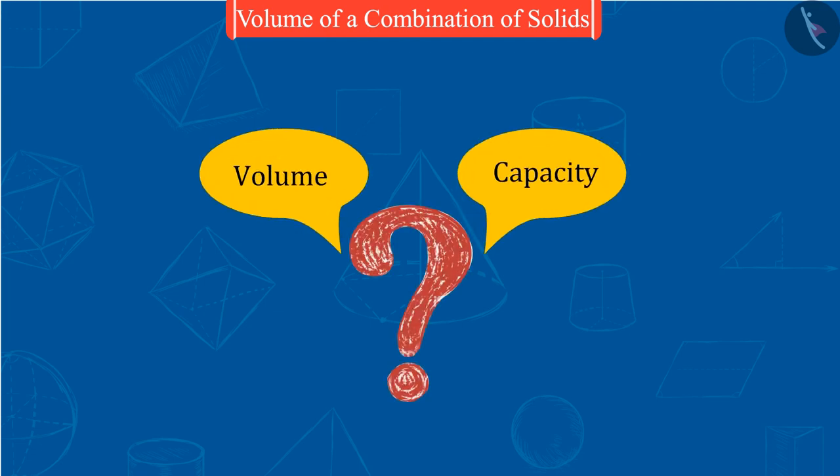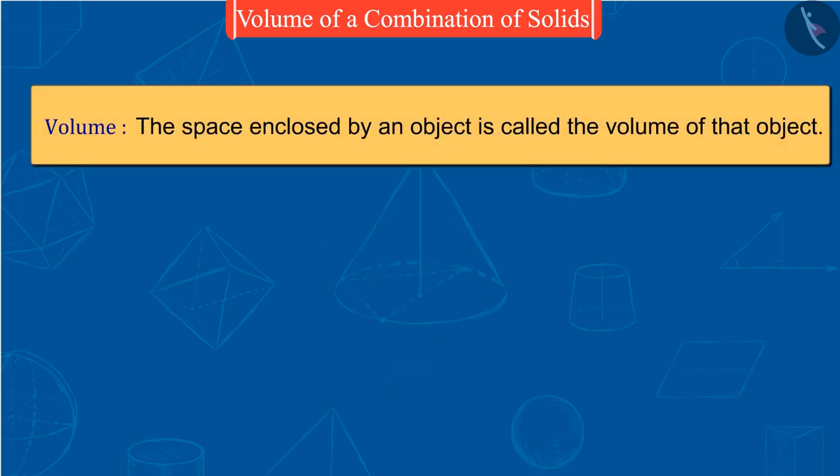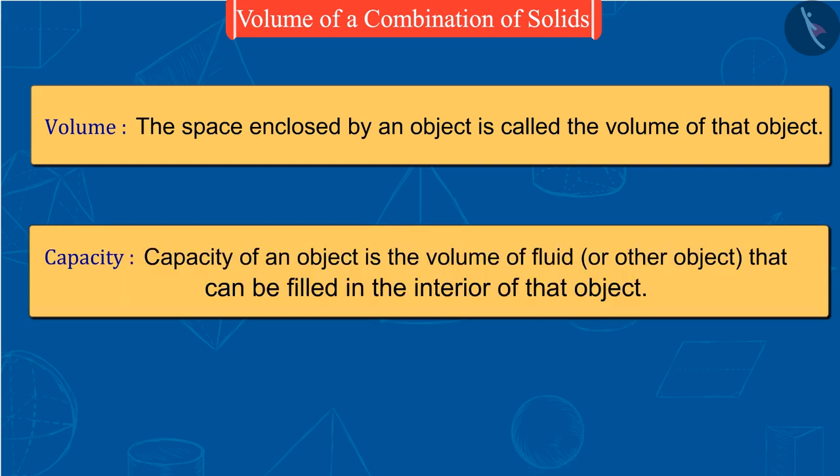Can you tell what does volume and capacity mean? Well done! The space enclosed by an object is called the volume of that object. Capacity of an object is the volume of fluid or other object that can be filled in the interior of that object.